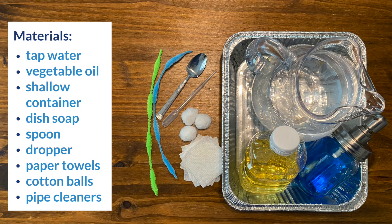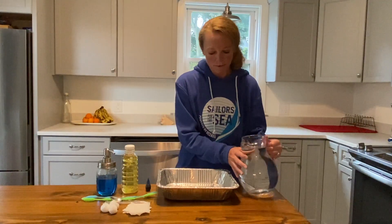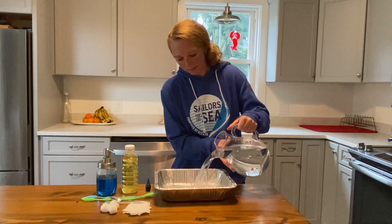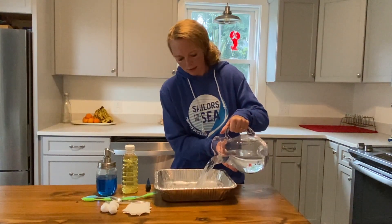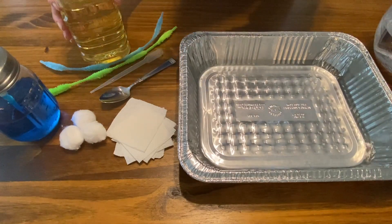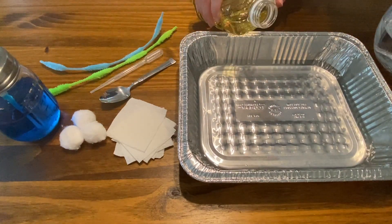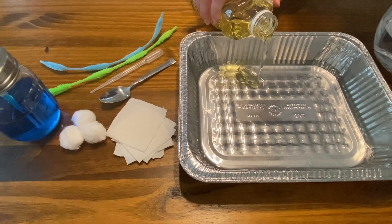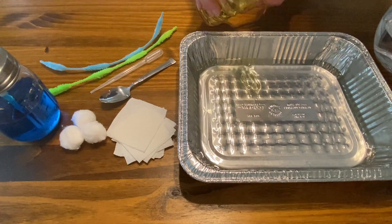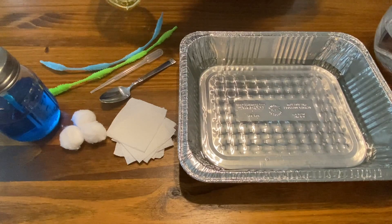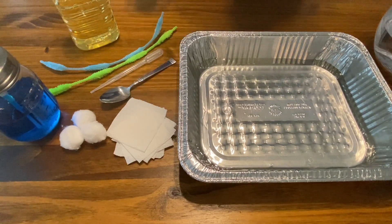For materials, you will need the following items. First, you will fill up the container halfway with water. Next, add a small amount of vegetable oil very slowly to mimic an oil spill. Now you will give your kids a variety of items to clean up the oil spill and have them record their observations.